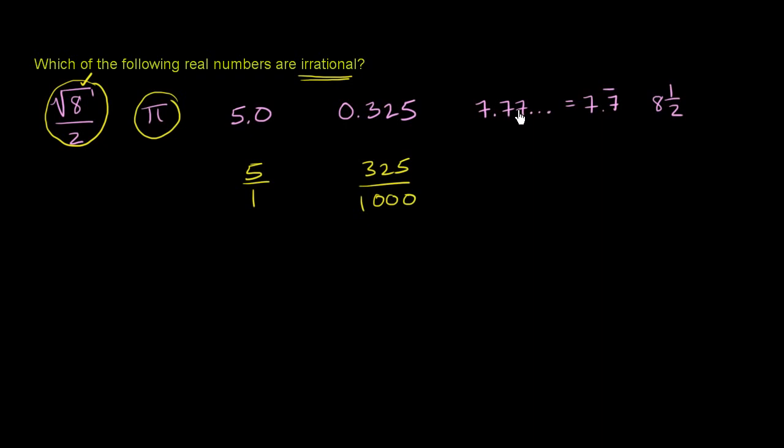Here I have 7.7777777 and it just keeps going on and on forever. And the way we denote that, you could just say these dots that say that the 7's keep going, or you could say 7.7 and this line shows that the 7 part, the second 7, just keeps repeating on forever.